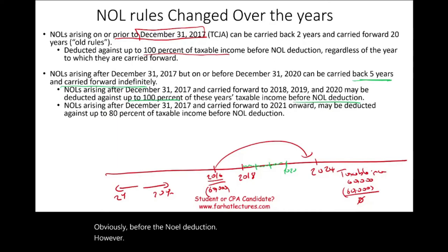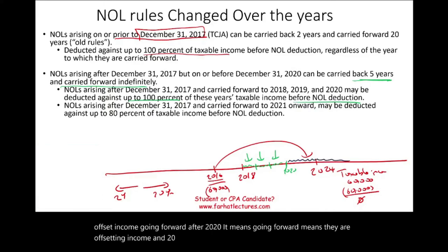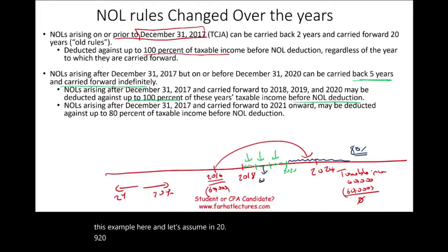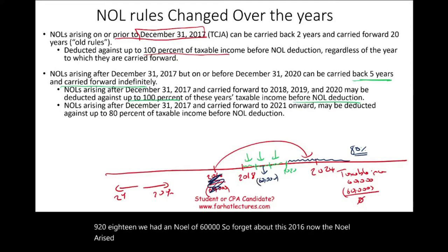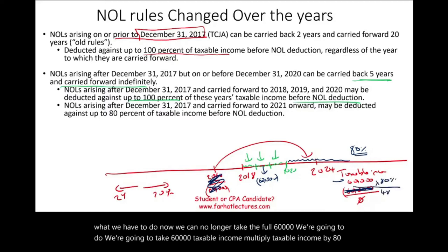However, when NOLs arising during 2018, 2019, and 2020 are used to offset income going forward after 2020 — meaning in 2021, 2022, and beyond — then those are limited to 80% of your taxable income. So using the same example: if we have $60,000 of taxable income in 2024, we take $60,000 times 80%, which gives us $48,000. That is the maximum we can offset.